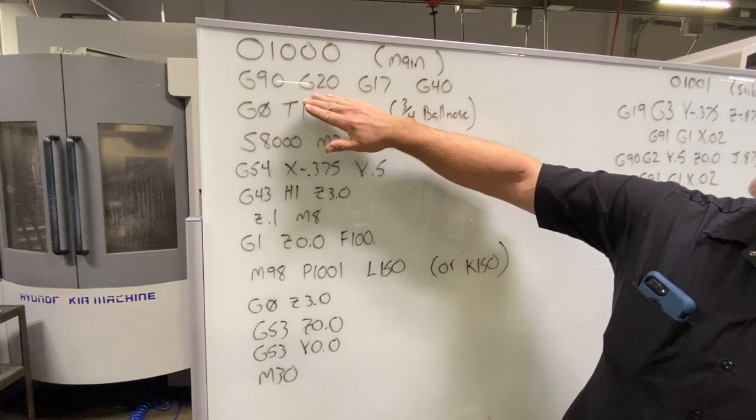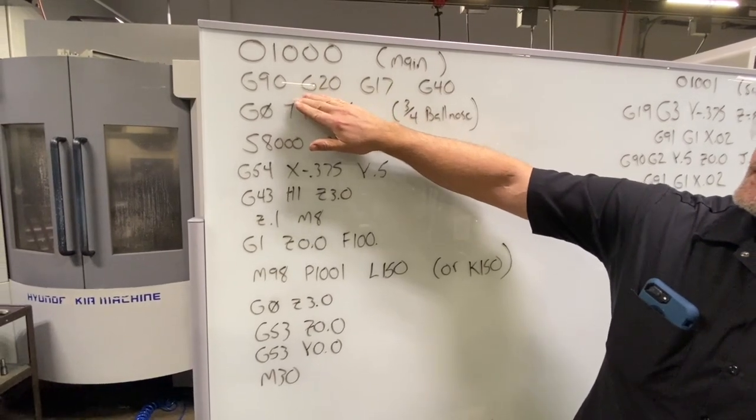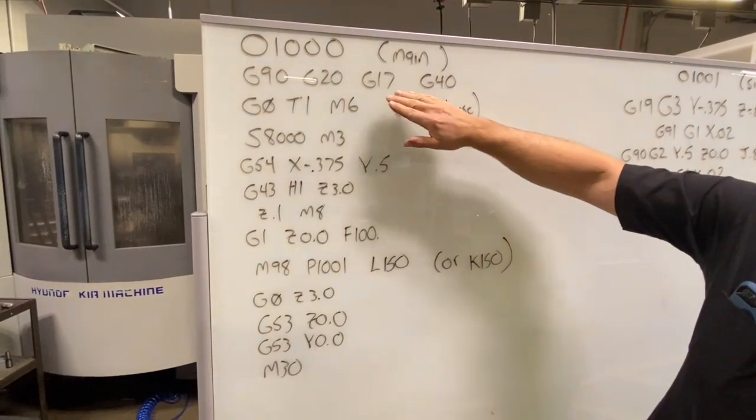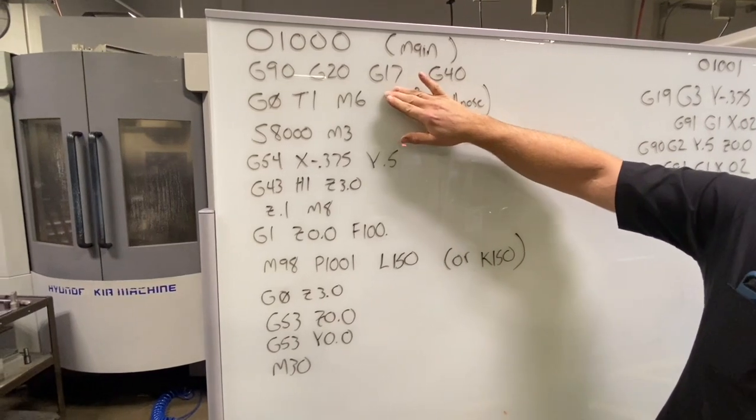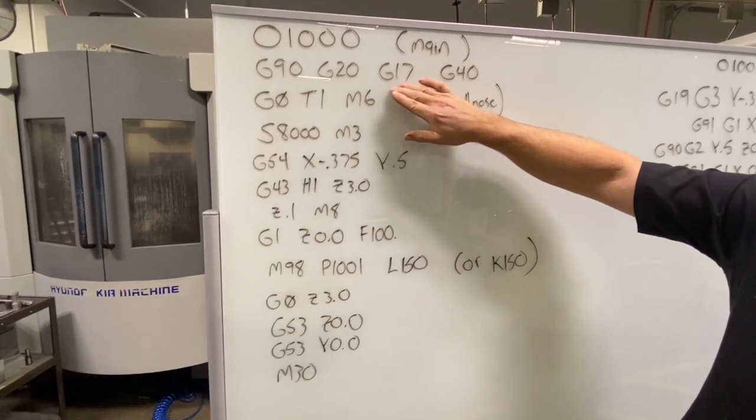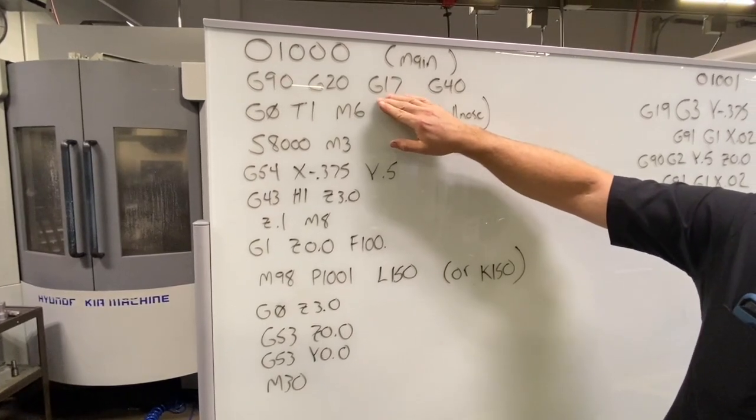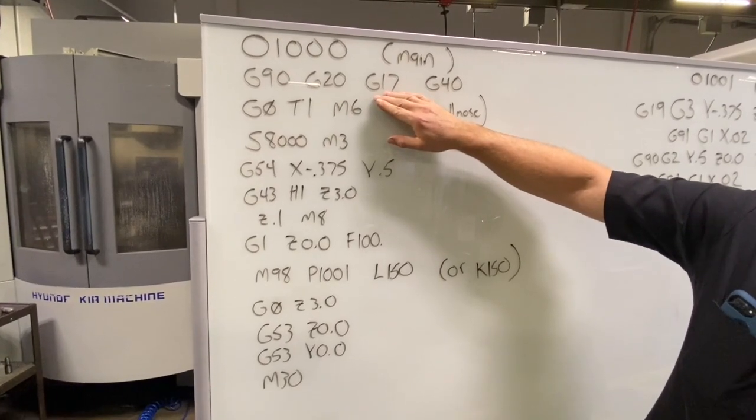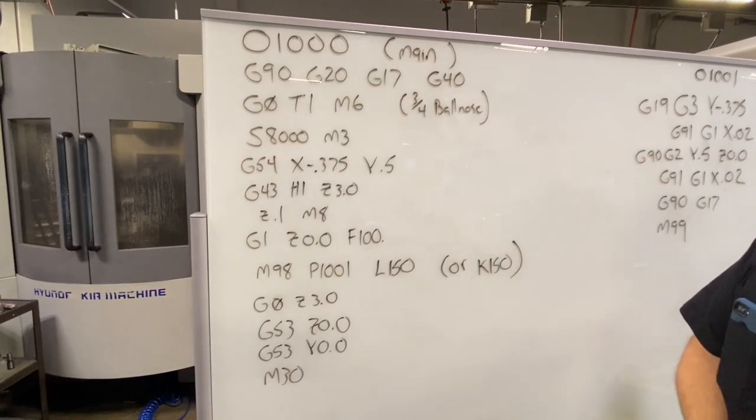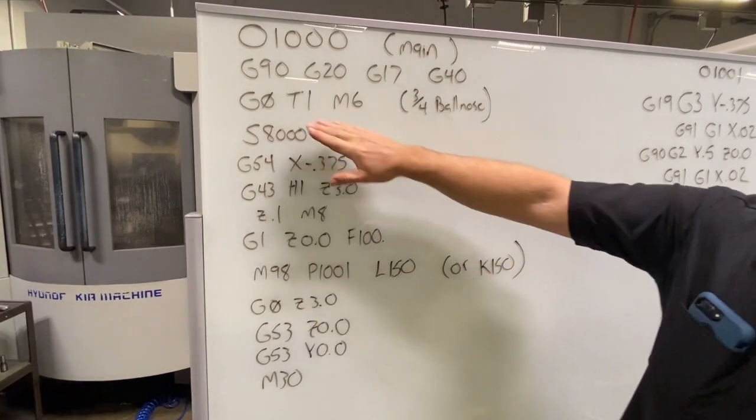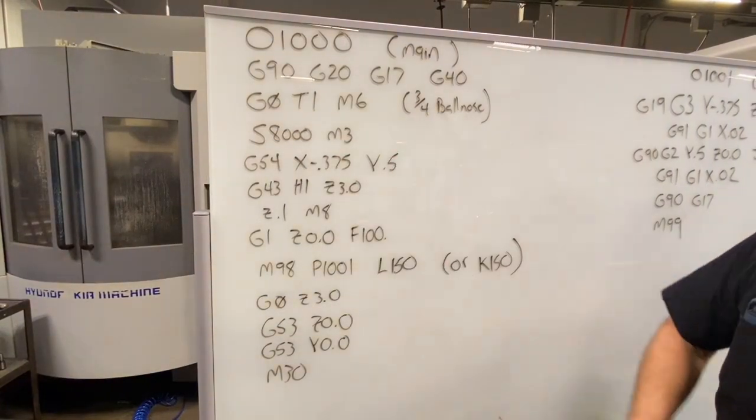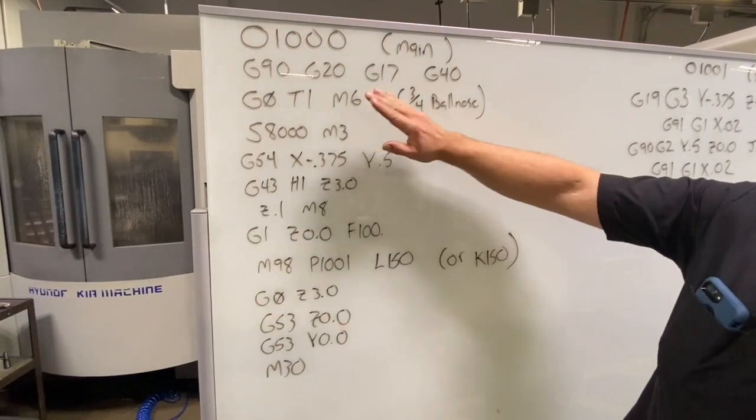So again starting with my program number and my first status line, I go into absolute positioning, inch measurement, and because we're doing some plane changes here moving from X and Y to the Y Z work plane, I just want to make sure I start off in my X and Y interpolation plane, and of course cancel any kind of cutter compensation that may be active. Then I go into rapid traverse, call up my three-quarter inch ball nose, T1 M6.